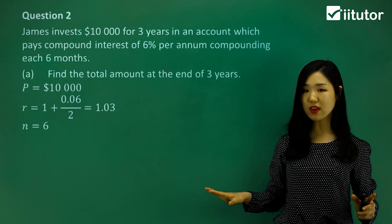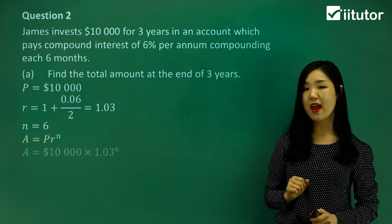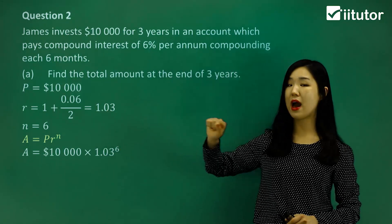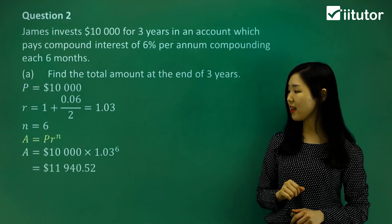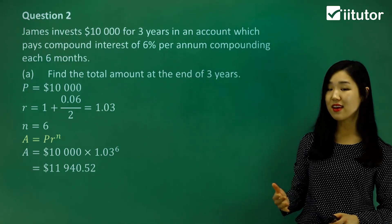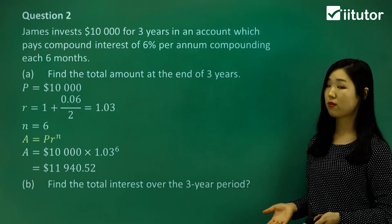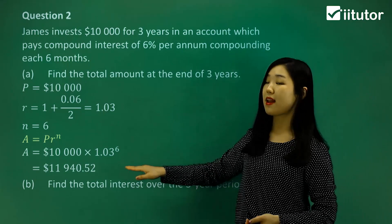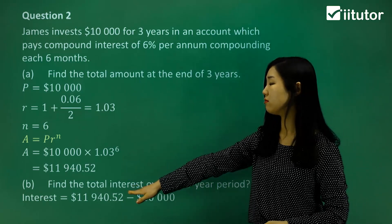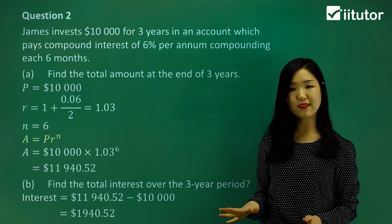Keep everything on a six-monthly basis, then put it into the formula P·R^n: P is 10,000, R is 1.03, and the power is 6. Calculate it and you'll get a value — it's larger than what we started with because of the interest that has grown. For the total amount of interest over the three-year period, subtract away your principal from the amount we've got now, and the difference will be our interest.